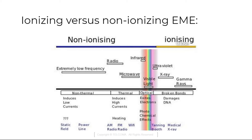Under non-ionizing, we have non-thermal and thermal. Visible light ranges in the optical ranges, and then we have ionizing which involves broken bonds. Non-thermal has low currents and static fields. Thermal induces high current and heating — AM, FM, and Wi-Fi fall under this category.